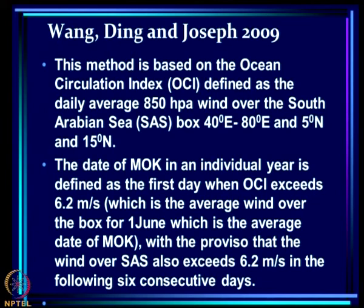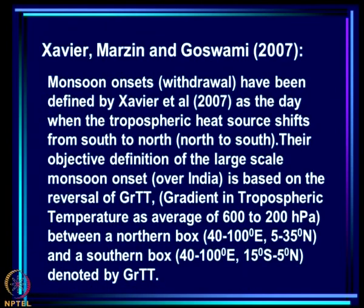Wang, Ding, and Joseph proposed another method based only on circulation, defining an Ocean Circulation Index (OCI) as the daily average 850 hPa wind over a box of 40–80°E, 5–15°N. The date of MOK in an individual year is defined as the first day when OCI exceeds 6.2 m/s — the average wind over the box for June 1st, the average MOK date — with the proviso that the wind over the box exceeds 6.2 m/s in the following six consecutive days.